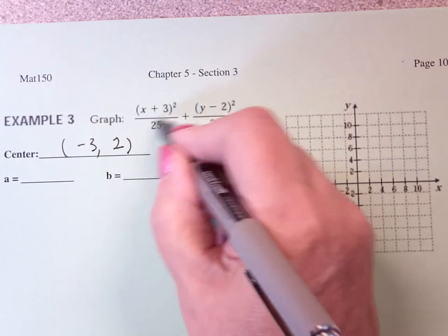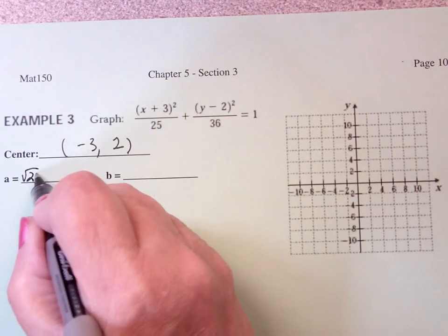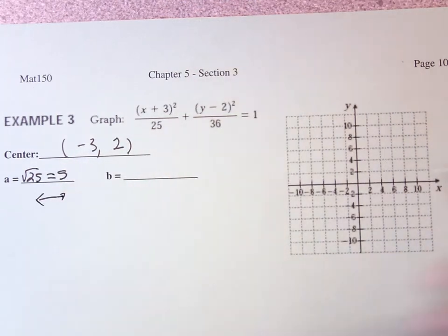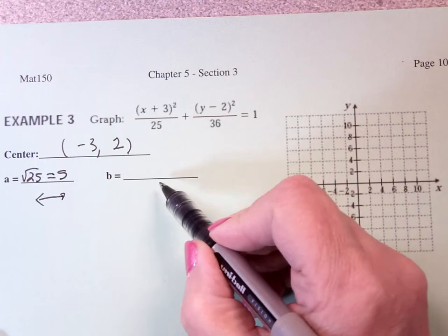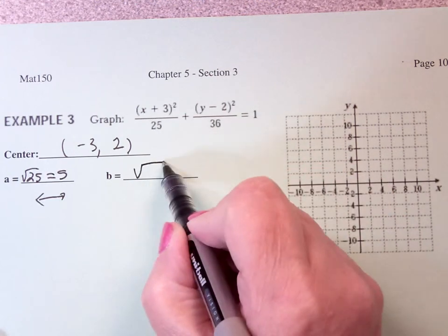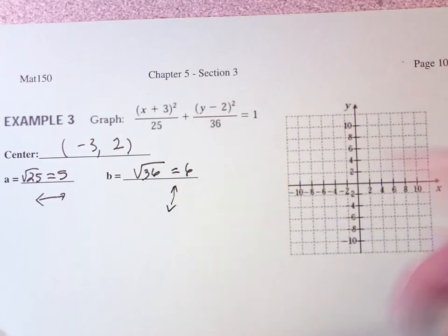And what's under the x is 25, so a is the square root of 25, which is 5. So that says I'm going to go back and forth 5 units from center. 36 is under the y, so I'm going to have the square root of 36, which is 6, so I'm going to go up and down.